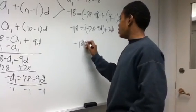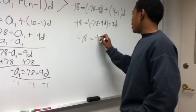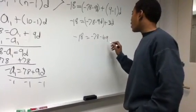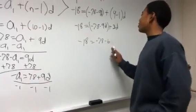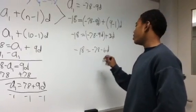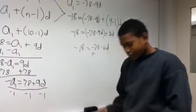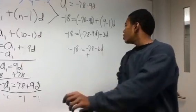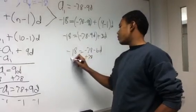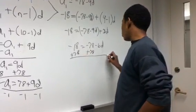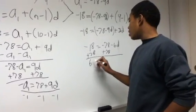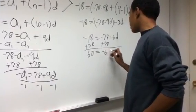Negative 18 equals negative 78 minus 9d plus 3d, which combines to negative 78 minus 6d. To isolate the variable, we add 78 to each side, giving us 60 equals negative 6d.